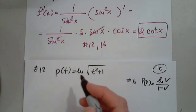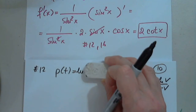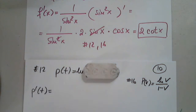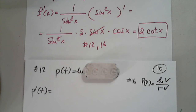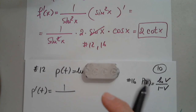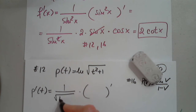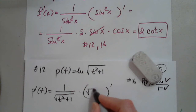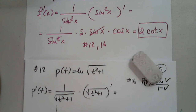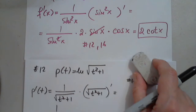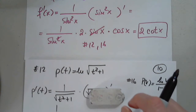So p prime — it's a natural log, so 1 over the function times the function prime. That gives us 1 over the square root of t squared plus 1. How do I differentiate the square root of a function?